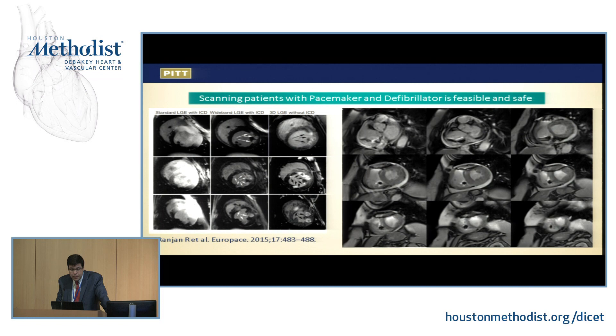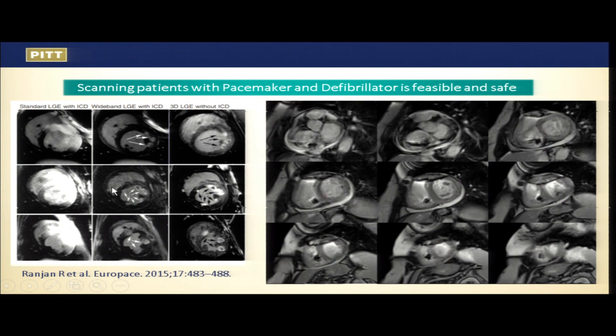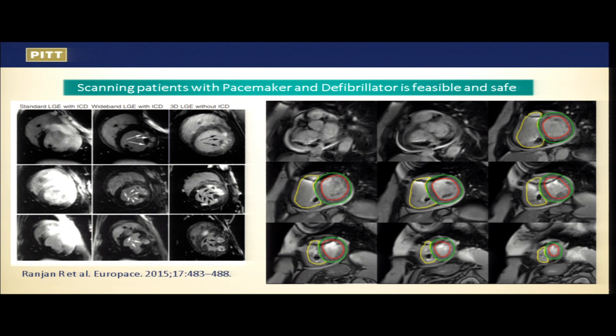There are developments of pulse sequences called wideband, both for CINE and for late gadolinium enhancement — work from the group at the University of Utah. With standard late gadolinium enhancement, we cannot resolve the anterior wall at all. With the wideband pulse sequence, signal is restored. This allows imaging of the most vulnerable patients — those who would benefit most from cardiac MRI — whom until now we could not image.